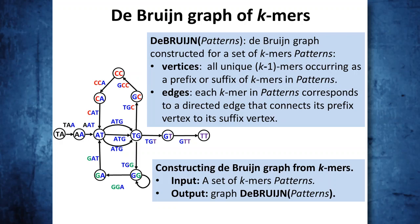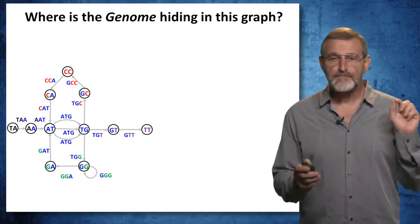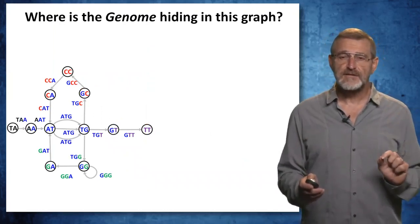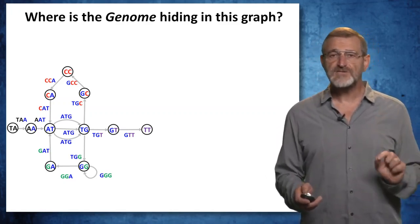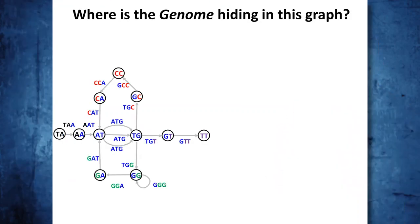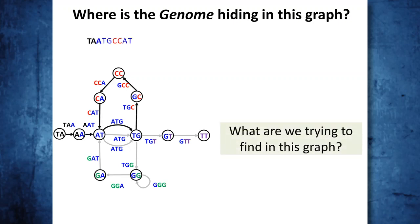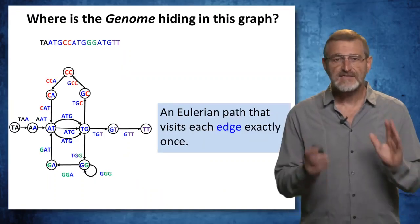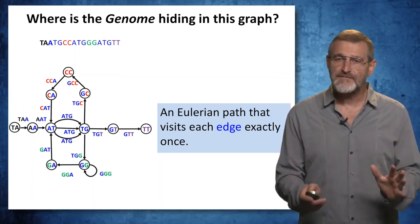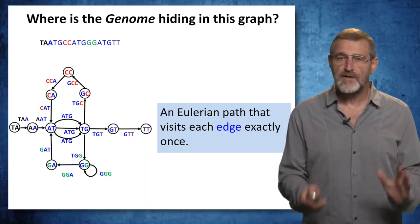The de Bruijn graph of a set of k-mers is constructed as follows: vertices of the graph are all unique (k-1)-mers occurring as a prefix or suffix of k-mers in the set; edges represent each k-mer, corresponding to a directed edge connecting its prefix vertex to its suffix vertex. The next problem you will have to solve is constructing a de Bruijn graph from a set of k-mers. Remember, we started from a genomic path that spells the genome and ended up transforming it into the de Bruijn graph. The genome is hiding in this graph as an Eulerian path that visits each edge exactly once. In the next segment, you will learn why I prefer to solve the Eulerian path problem over the Hamiltonian path problem.